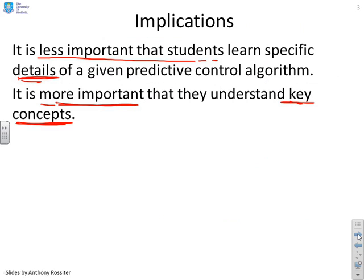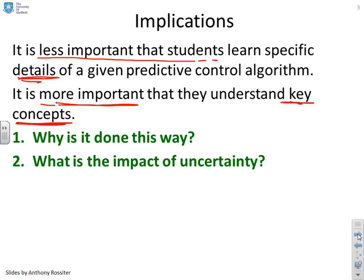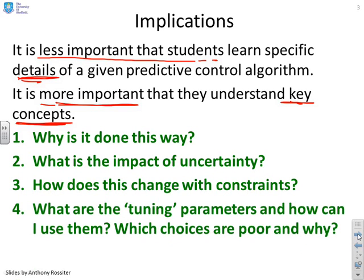What is predictive control? Why does it work? How does it work? Why is it done the particular way that it's done? What is the impact of uncertainty and how might that change depending on the context? How does the algorithm change when you include constraints, and how might that vary with the context or the nature of the constraints?